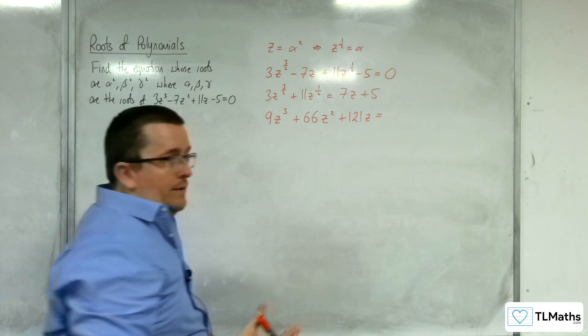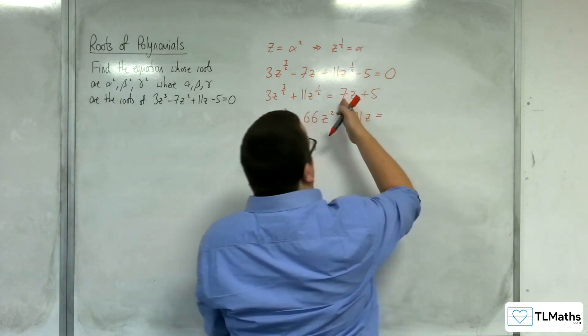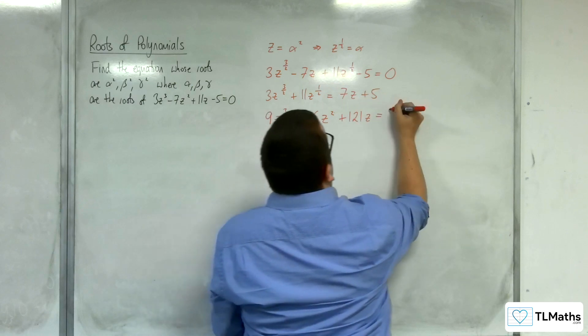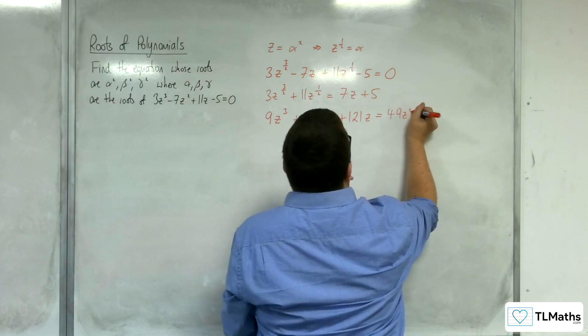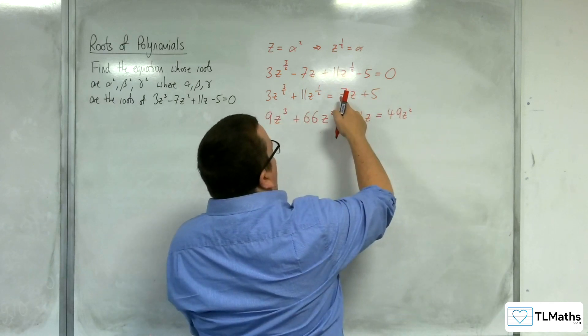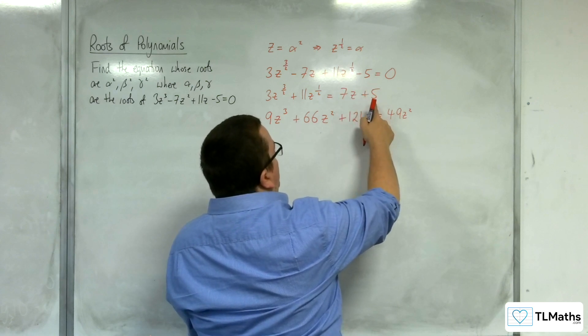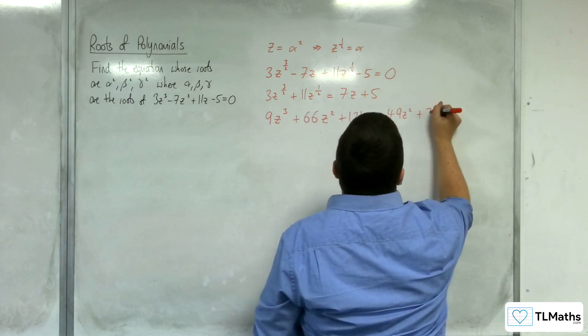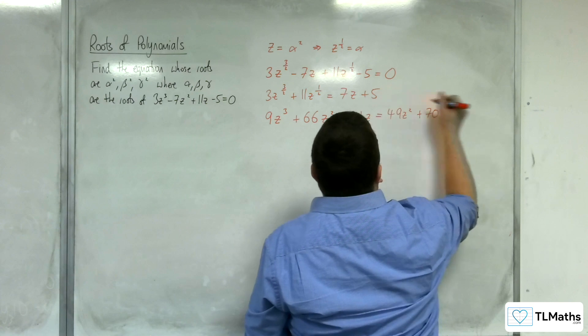and then I'm going to get 11z to the half squared, which is 121z. On the right-hand side, I'm going to get 7z times 7z, so 49z², I'm going to get 2 lots of 7 times 5, which is 70z, and then plus 25.